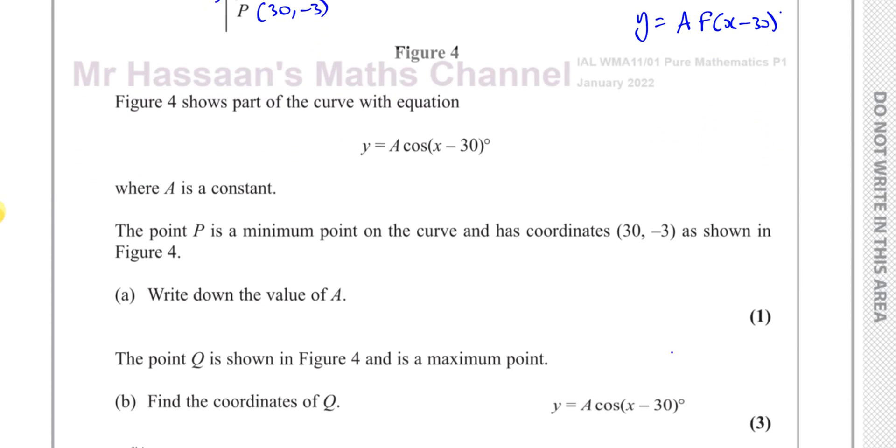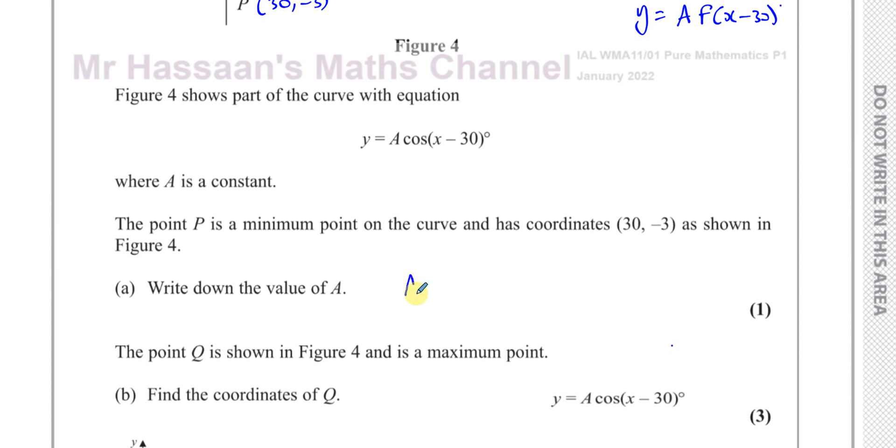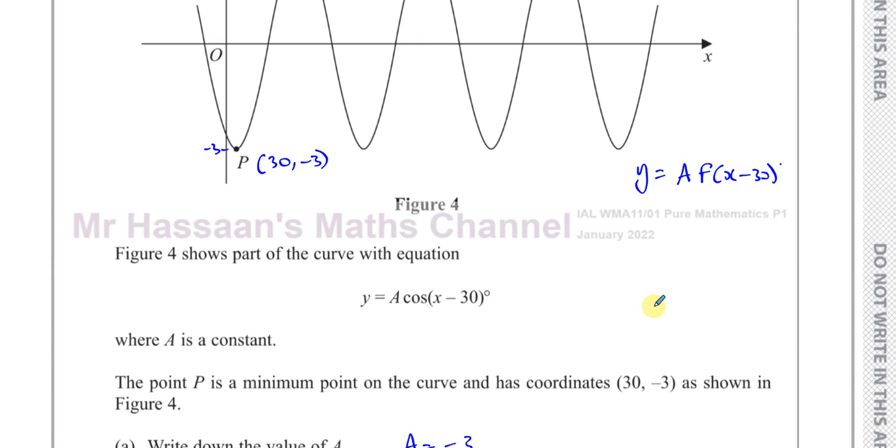So it looks like a is equal to negative 3 here. So write down the value of a. We can say a equals negative 3. Simple as that. That's the answer to part a. We can write that down straight away. a is negative 3.